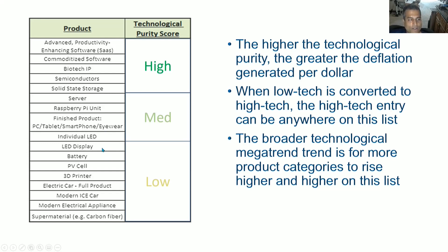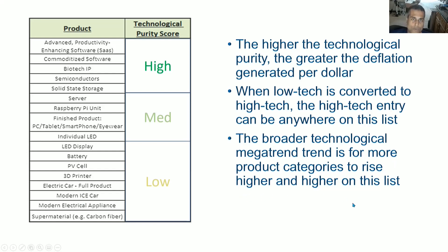Low-tech products still have some exponentiality, but as we get to the bottom of this list, it is no longer high-tech at all — such as a modern internal combustion engine car, a modern electrical appliance, or even a super material like carbon fiber. It's not really high-tech yet; it's higher-tech than its predecessor but it's not a 10%-a-year improving thing. Even a photovoltaic cell, while higher-tech than other sources of electrical generation, is not a 10%-a-year improving type of thing. But the broader technological mega trend is for more product categories to rise higher on this list. For example, batteries: they were improving at a very slow rate, but the battery revolution and the EV revolution have made certain types of batteries improve at 10% a year in terms of efficiency per unit cost.